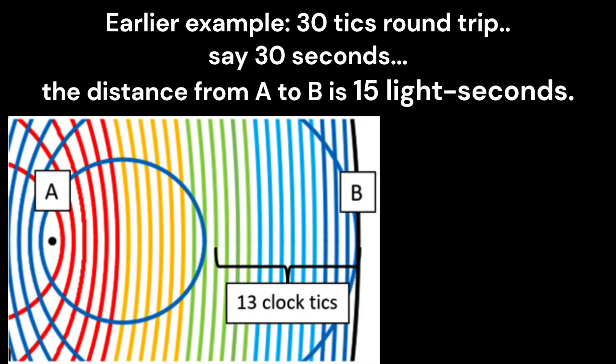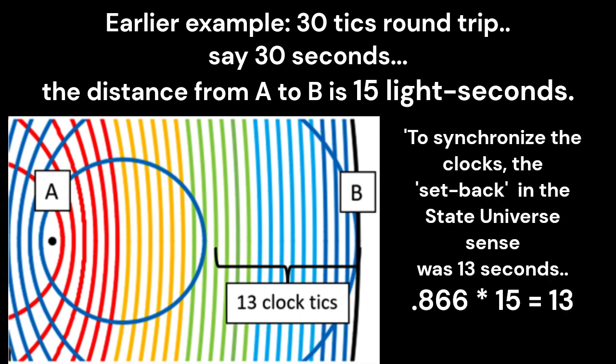So as a refresher, when we first looked at time skewing, we had a time cycle of 30 clock ticks. Let's call it 30 seconds. If we call it 30 seconds, that means that the round trip was 30 light seconds, and the distance from point A to point B is then 15 light seconds. And we found that to synchronize these clocks in the reference frame, the time skewing, the clock could be the leading clock. This whole thing's moving to the right. The leading clock had to be set back in the state universe sense by 13 seconds. And so there it is, 0.866 times 15, which is the distance, equals 13, the time skewing, the amount that the leading clock has to be set back in time to be synchronized in the reference frame.